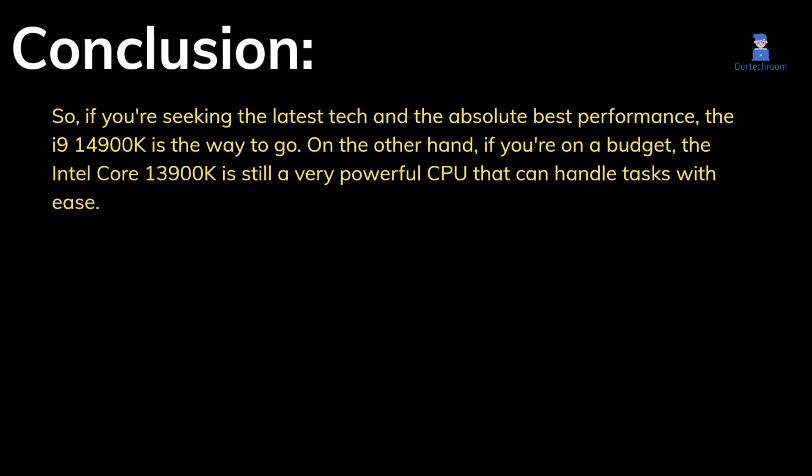So, if you're seeking the latest tech and the absolute best performance, the i9-14900K is the way to go. On the other hand, if you're on a budget, the Intel Core i9-13900K is still a very powerful CPU that can handle tasks with ease.